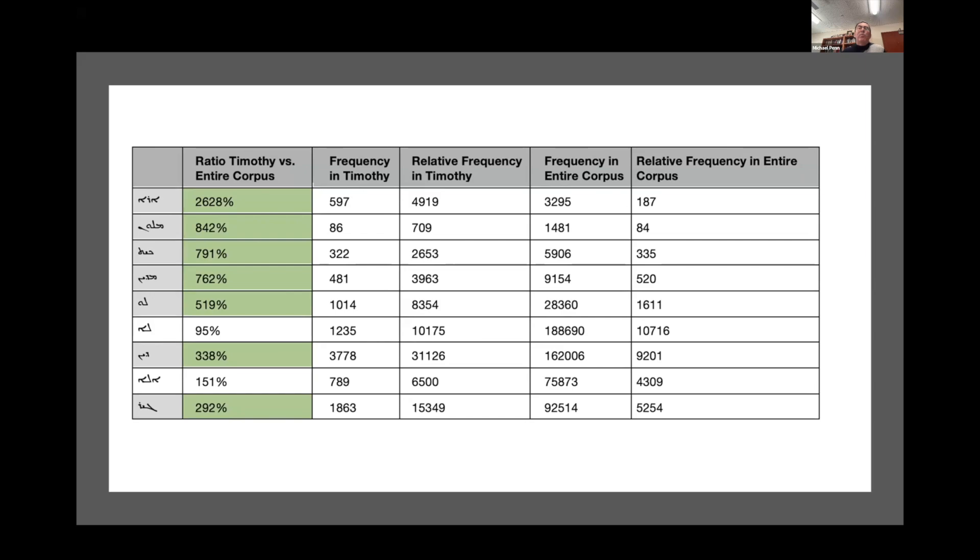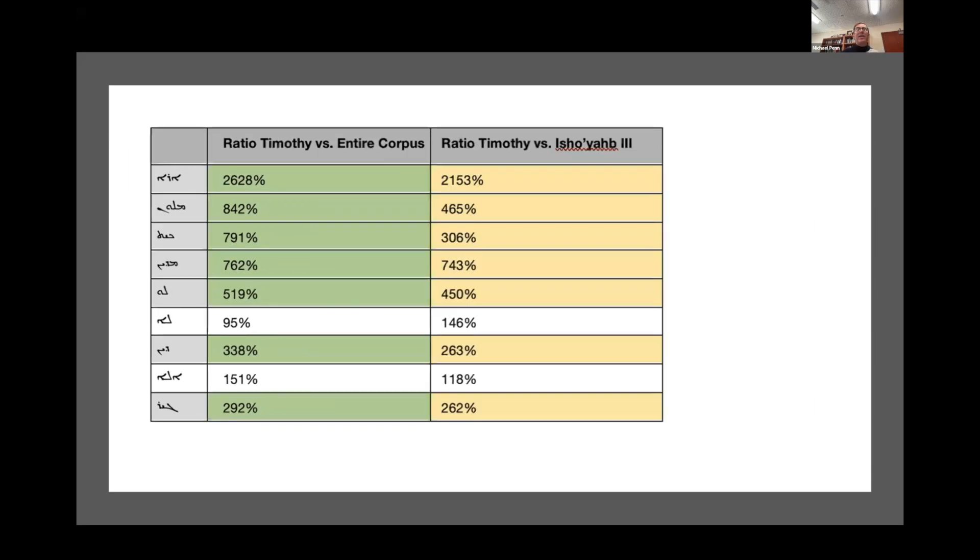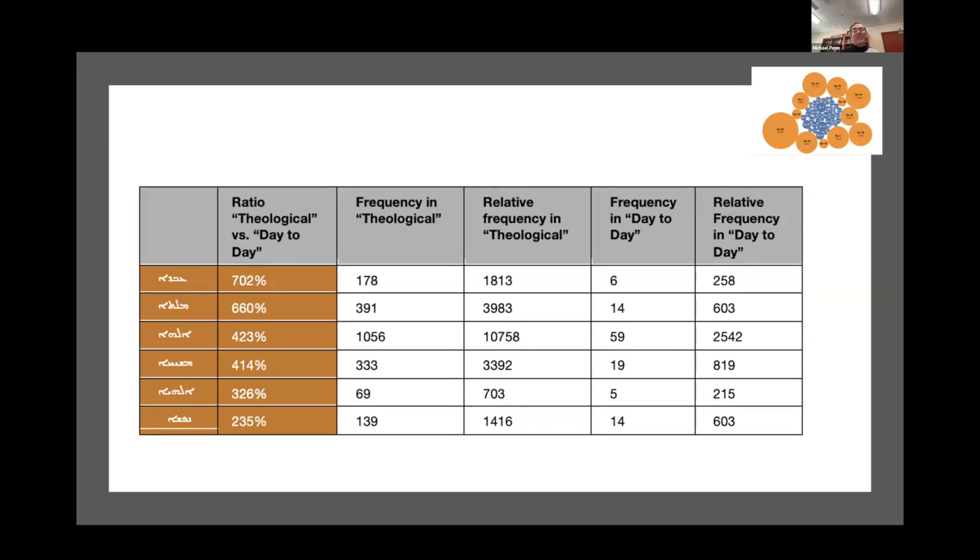This sort of over-representation of a corpus gives us some idea of Timothy's actual style from a distance. Now, one could easily object that obviously when you're writing a letter, you're going to write in prose different than an Ephraim poetry. And so here I ran a very quick control experiment, comparing the same words in Timothy's corpus to that of another letter corpus, that of another Catholicos Isho of the third. When we make this comparison, the numbers change a bit, but the overall picture of what words are heavily over-represented in Timothy's corpus remains the same. So too, that division between those letters that are primarily theological that Timothy writes and his day-to-day letters, that division is also reflected in individual words that become over-represented in one part of the corpus versus another.